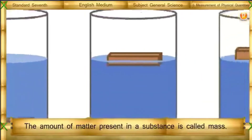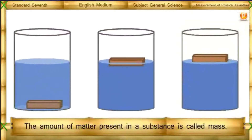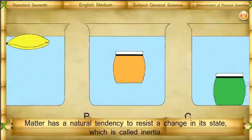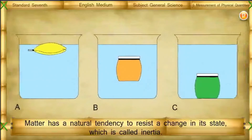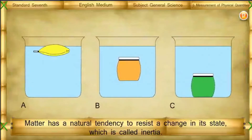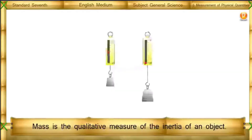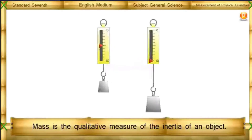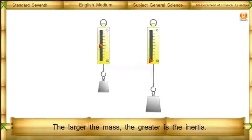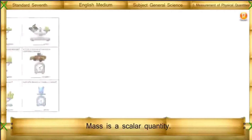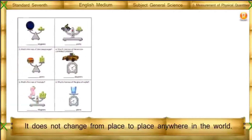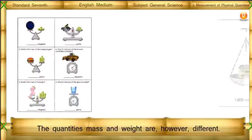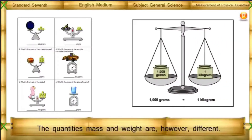The amount of matter present in a substance is called mass. Matter has a natural tendency to resist a change in its state, which is called inertia. Mass is the qualitative measure of the inertia of an object — the larger the mass, the greater is the inertia. Mass is a scalar quantity and does not change from place to place anywhere in the world. The quantities mass and weight are, however, different.